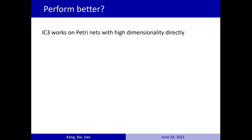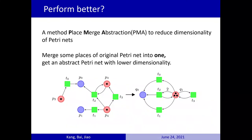However, IC3 works on Petri nets with high dimensionality directly. Can it perform better? Here is a method we call PlaceMerge Abstraction. It reduces the dimensionality of Petri nets by merging some places into one, and then gets an abstract Petri net with lower dimensionality.